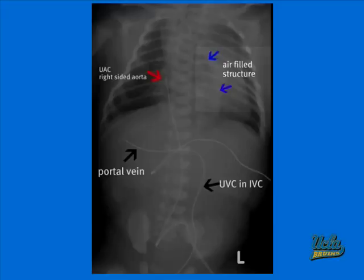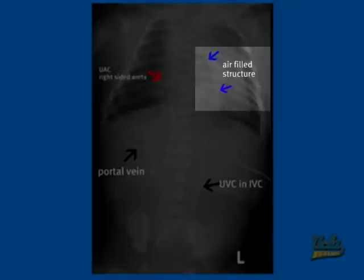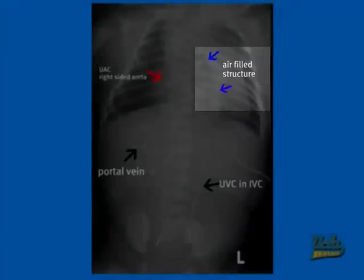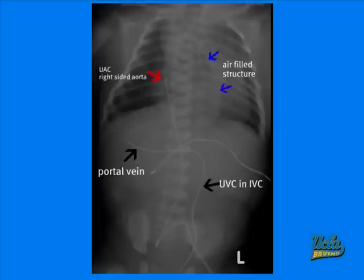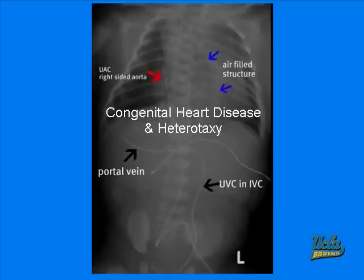In this KUB, we see an air-filled structure located with blue arrows. This is actually the dilated esophagus, which is suggestive of gastric outlet obstruction. We also see that this infant suffers from congenital heart disease and heterotaxy, as the UVC is located on the left and the UAC is located on the right-sided aorta.